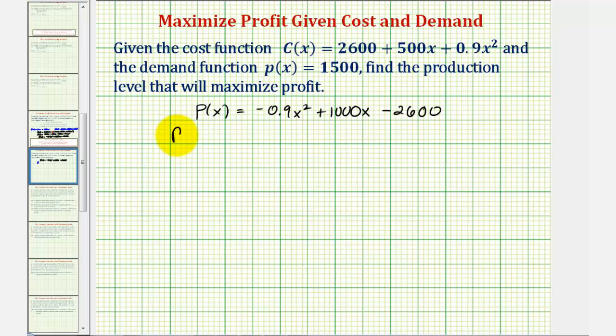So P'(x) is equal to the derivative of negative 0.9x squared. We multiply by two—that's negative 1.8—subtract one from the exponent, that would be x to the first, or just x, plus the derivative of 1000x, which is 1000, minus the derivative of 2600, which is zero.